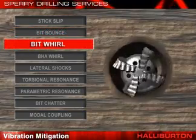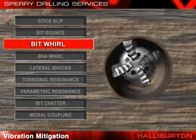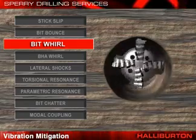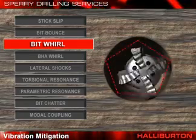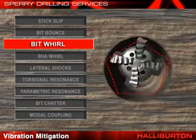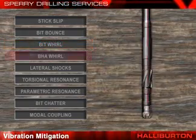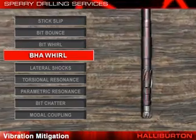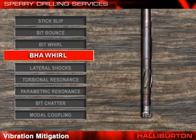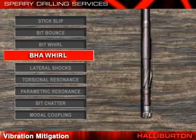Next is bit whirl. It occurs when the bit has cut itself a hole larger than its own diameter, allowing it to wander around in the wellbore instead of simply rotating around its natural center. Excessive side cutting creates an over-gauge hole that, in turn, increases the tendency for the bit and BHA to continue whirling. Number four mechanism is BHA whirl — the eccentric rotation of the BHA around a point other than its geometric center in a complex motion, generating lateral displacements, shocks, and increased friction against the wellbore.